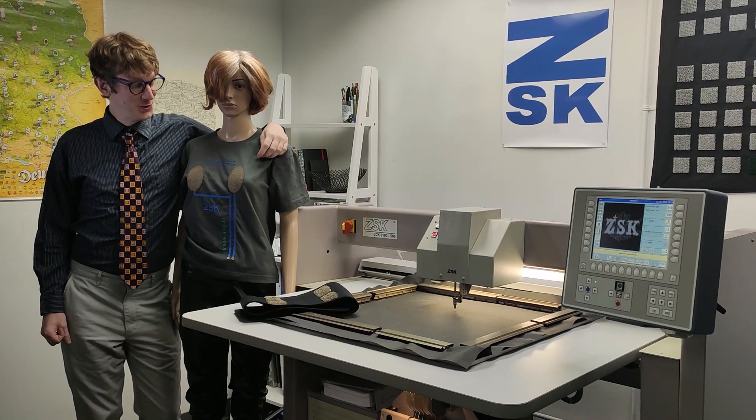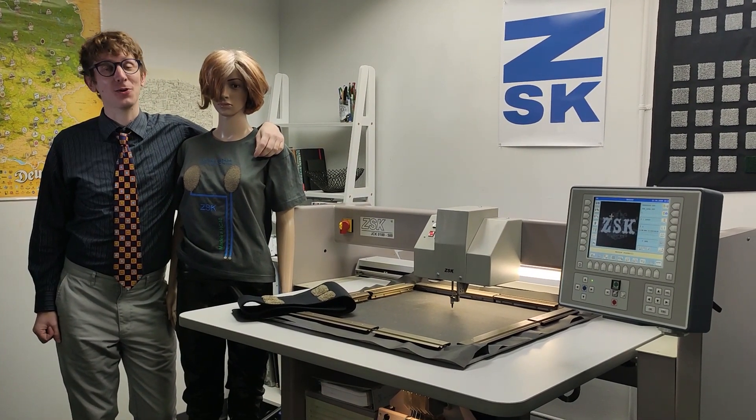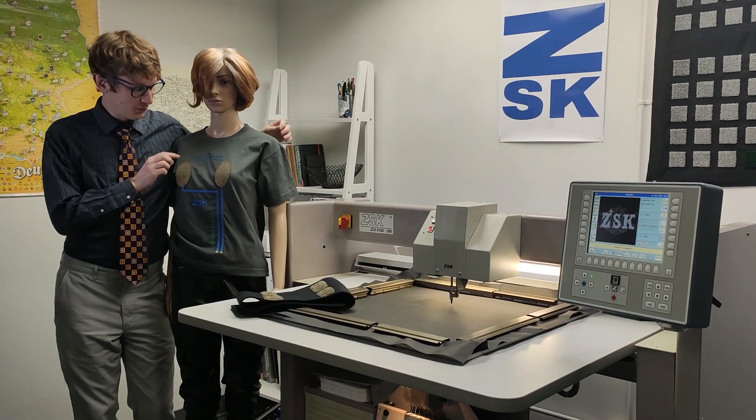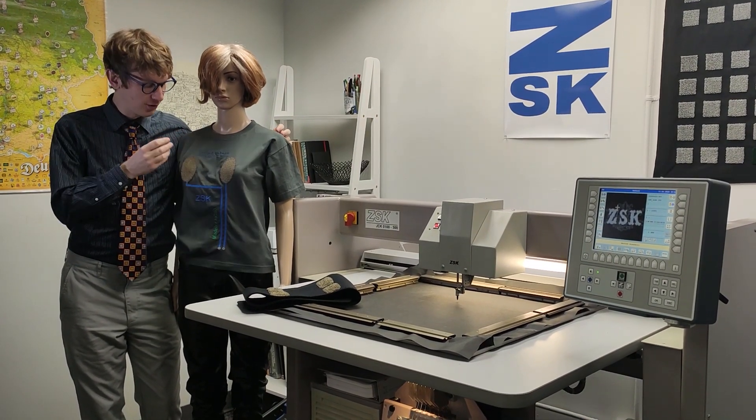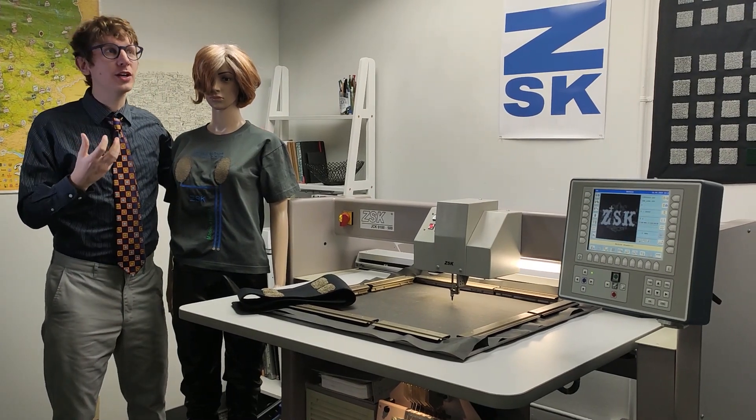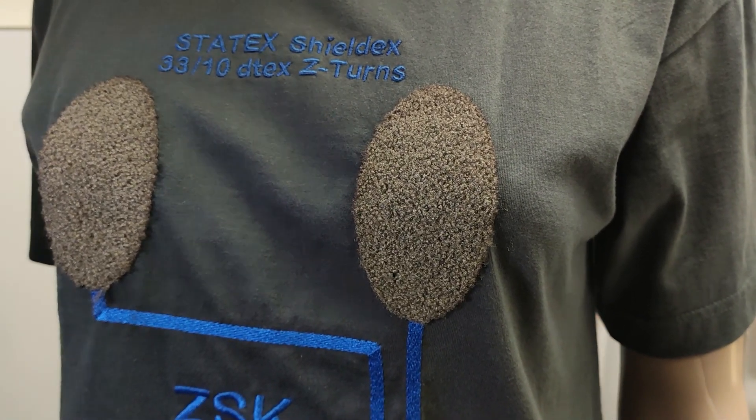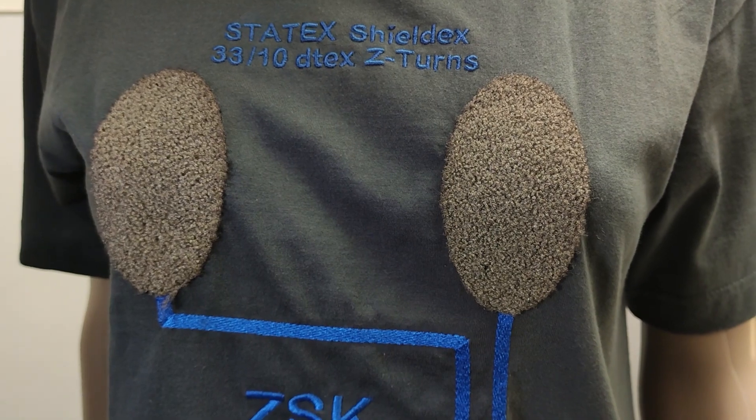So I'm here with Sandra. She's wearing one of our heart rate monitoring shirts made with K-head embroidery. For this shirt we have a very fine textile structure, very small, allowing for very good conductivity as well as a very low pile height so you don't feel it as much against you. It's very smooth.